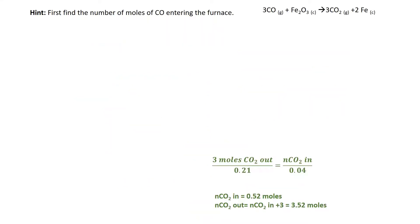The hint was to first calculate the number of moles of CO entering the furnace. We have this chemical equation and we're dealing with one mole of hematite, but the problem also gives us the composition of the input gas stream and the exit gas stream. That's why I included this hint — to calculate the moles of CO entering the furnace.